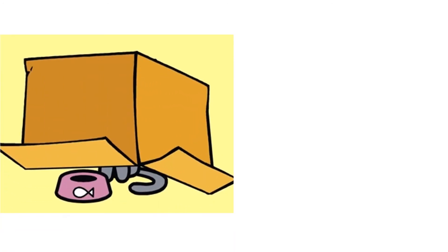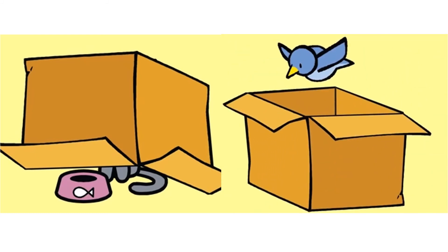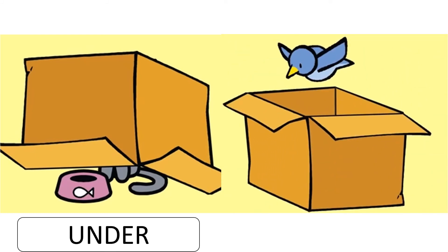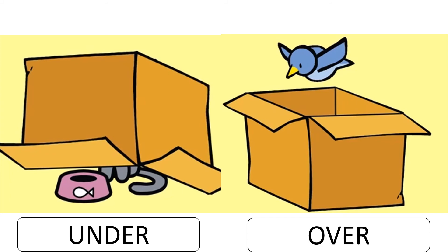Now where is the cat? The cat is under the box. And the bird is over the box. So under and over.